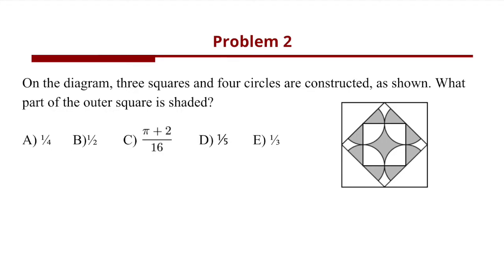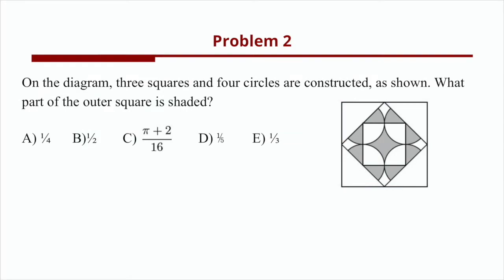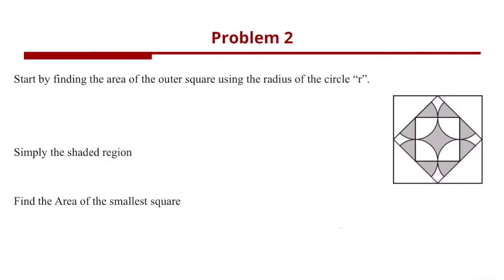Now we'll solve problem number two. On the diagram, three squares and four circles are constructed as shown. The question asks: what part of the outer square is shaded? To solve this, we start by finding the area of the outer square using the radius of the circle, which we'll name r. The radius of the circle equals the half-length of the smallest square.